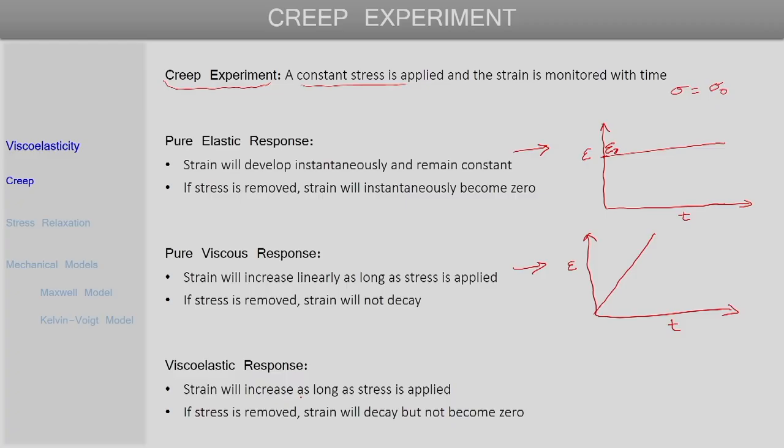If we now look at a typical response of a viscoelastic material, what happens is that the response is again intermediate between elastic and viscous response. As the stress is applied to a viscoelastic material, the strain actually increases with time, but the increase is not linear. Unlike a purely viscous material, for a viscoelastic material the strain increase will be there but it will be non-linear with time.